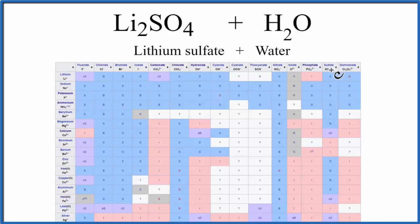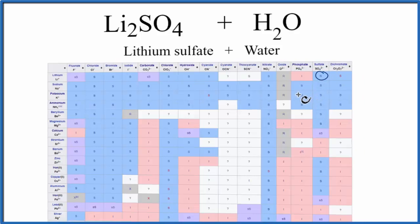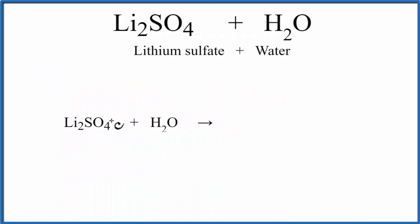SO4 2 minus. And we see that there's an S, so that means that this is going to be soluble in water. So let's go back to our equation, and when we put solid Li2SO4 into liquid water, it's going to break apart, or dissociate, into its ions.